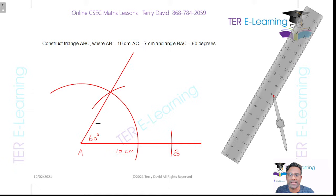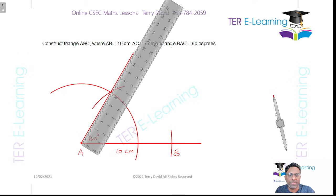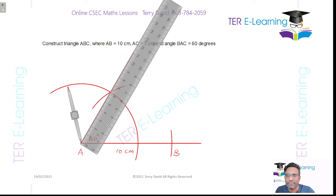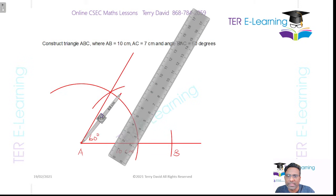We don't know where point C is yet, but the question says that AC is 7 cm. So take your compass and open it to a length of 7 cm — use your ruler to achieve this. Let's make sure that's actually 7 cm.